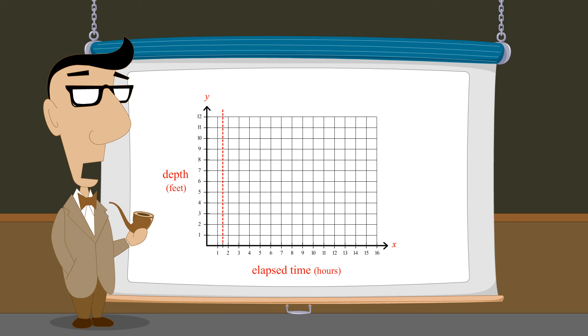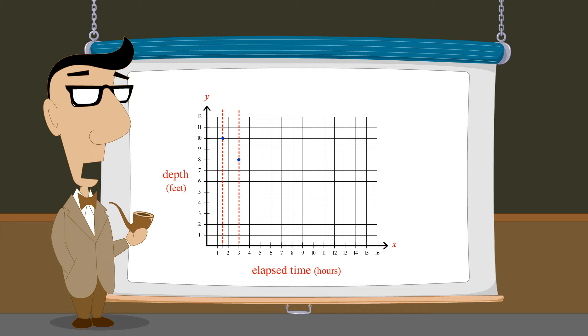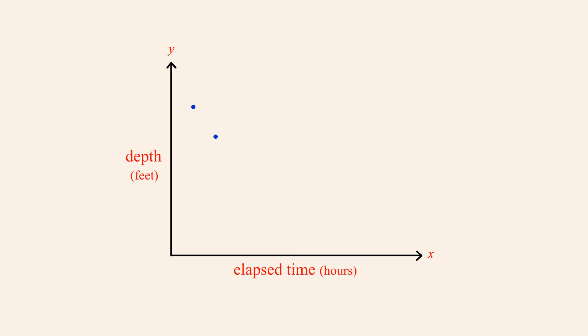We know that at 1:30, one and a half hours after the drain was opened, the water level was 10 feet. And at 3 o'clock, after three hours of draining, the water level was 8 feet. However, there is one problem. With only two data points, it is impossible to determine whether the water level is dropping by the same amount every hour or if the water level drops more quickly as time goes on or perhaps if the water level drops more slowly with increasing time. Taking one additional measurement at a third time would allow us to determine which scenario more accurately represents the water level as a function of time.